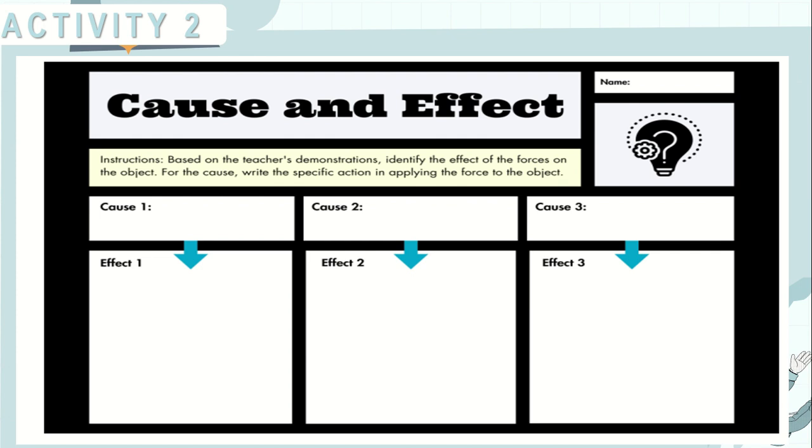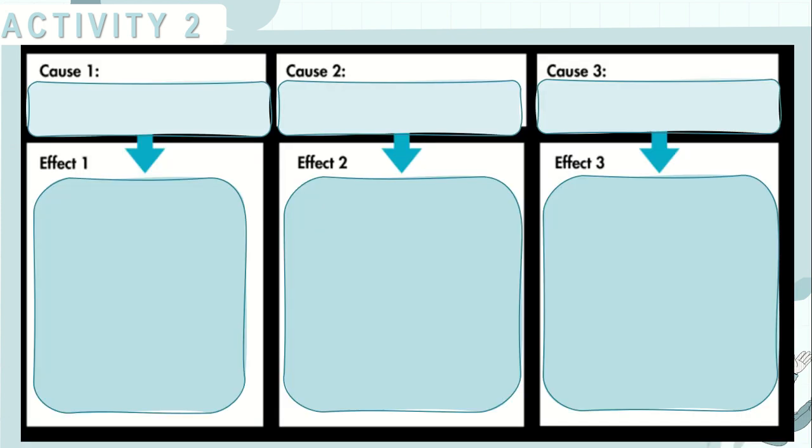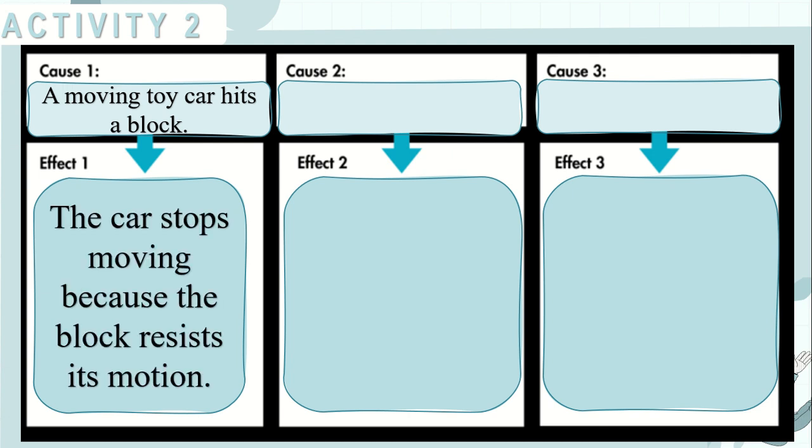Complete the table. Here are the possible answers. For the cause one, a moving toy car hits a block. For the effect, the car stops moving because the block resists its motion.